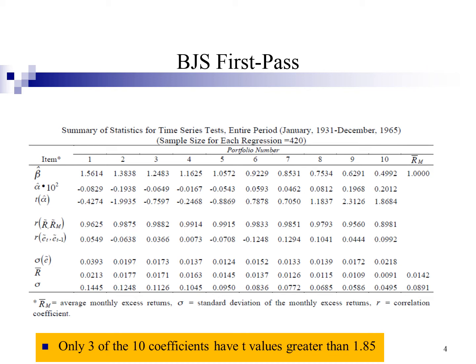The BJS findings show that only 3 out of 10 alpha coefficients have t-values greater than 1.85: portfolio number 2, portfolio number 9, and portfolio number 10.